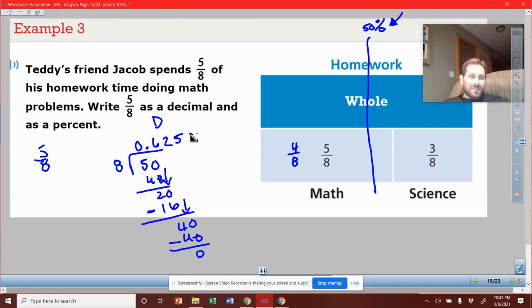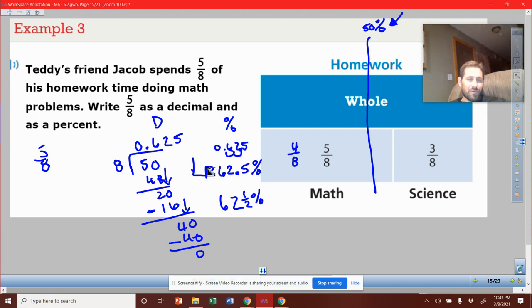So I've written my answer as a decimal. Now to turn this into a percent, we'll rewrite it. We'll move it one, two. So it's going to land right between the two and the five. So it's 62.5%. And some people may write this as 62 and a half percent because we know the decimal one half is the same as 0.5. But you're more than likely going to see an answer in this form.